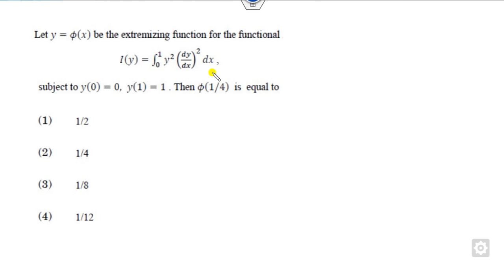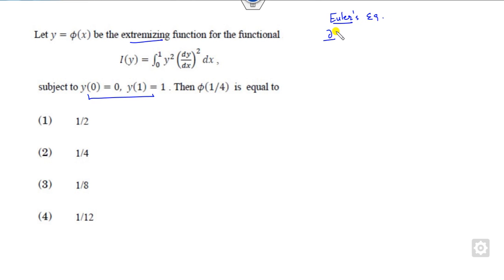We will see how you can solve the first question, which is related to finding the extremals with some boundary conditions given to you. Whenever there are extremal questions, you always start with the Euler equation: partial derivative of f with respect to y, minus d/dx of the partial derivative of f with respect to y-dash. This is my f.